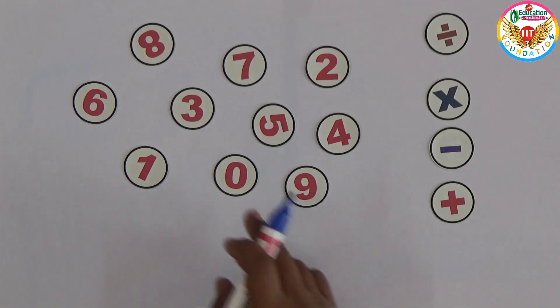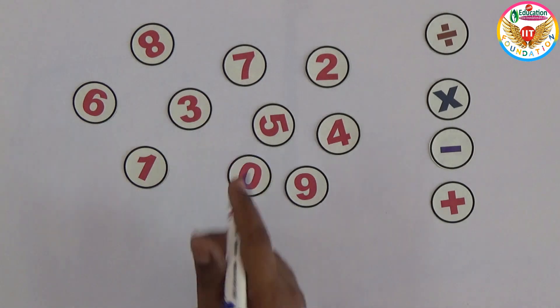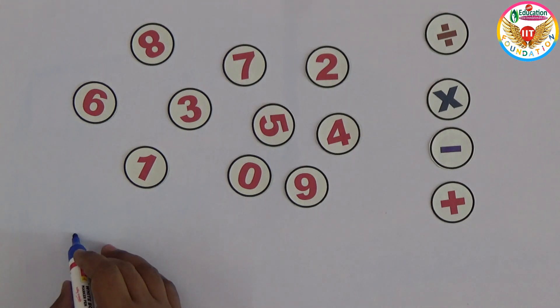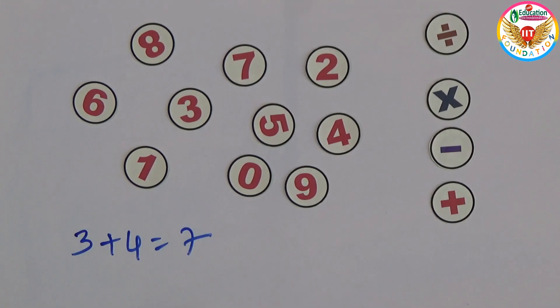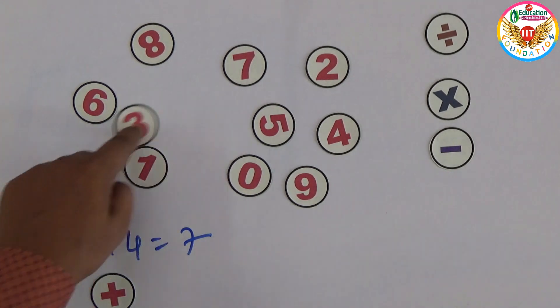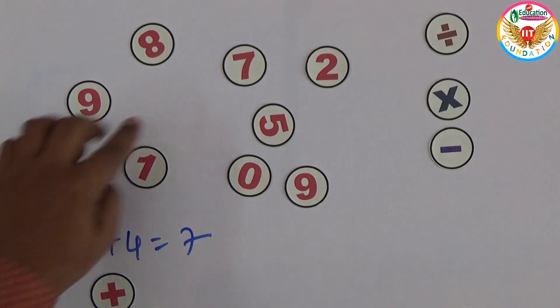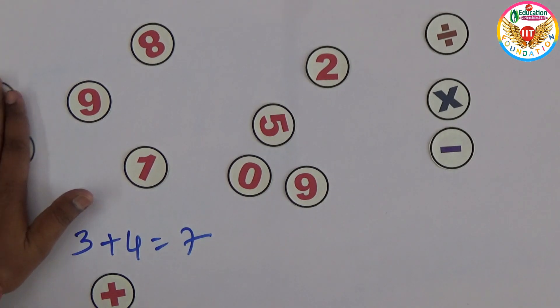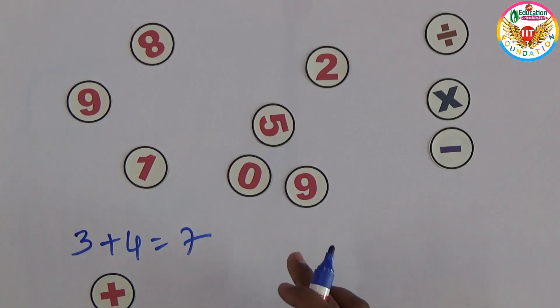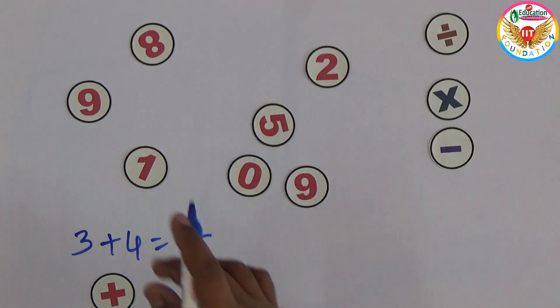For example, let me take 3 plus 4 equals 7. So one operation I used, 3, 4, 7 I used. So 3, 4, and 7 are over, we can take out this and the remaining.